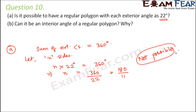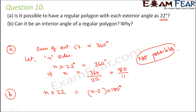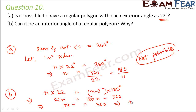The second part of the question asks: can 22 degrees be an interior angle of a regular polygon? If each interior angle is 22 degrees and the polygon has n sides, then the sum of interior angles is n × 22. This must equal (n − 2) × 180. Solving: 22n = 180n − 360, so 158n = 360, giving n = 360 ÷ 158. This also does not yield a whole number, so it is not possible.